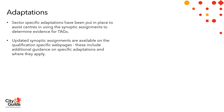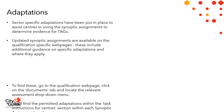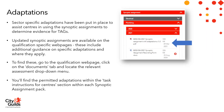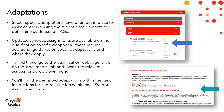Updated synoptic assignments are available on the qualification specific web pages. These include additional guidance on specific adaptations and where they apply. To find these, go to the qualification web page, click on the documents tab and locate the relevant assessment drop down menu. You'll find the permitted adaptations within the task instructions for centres section within each synoptic assignment pack.